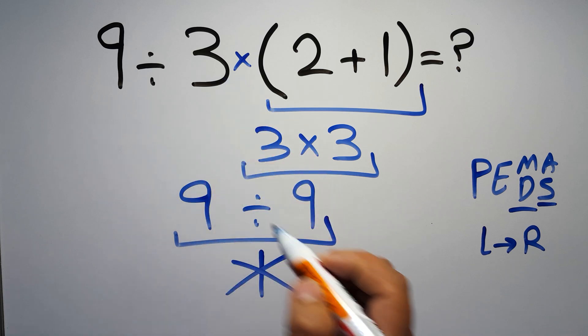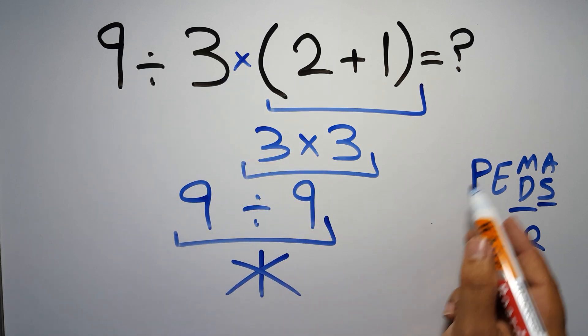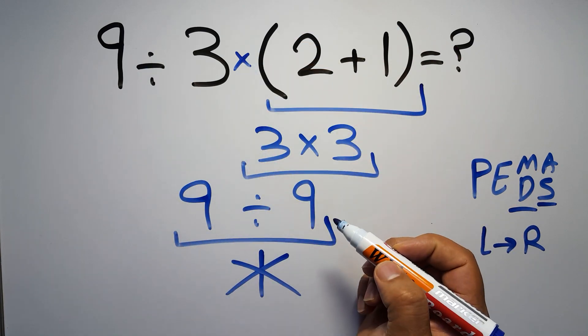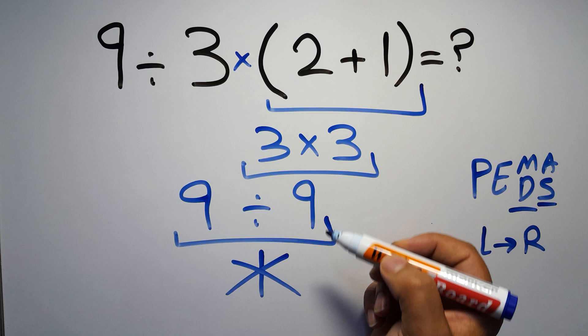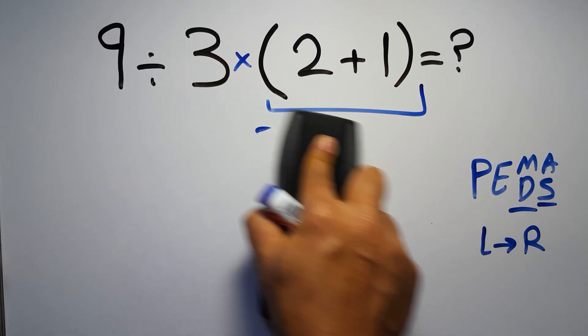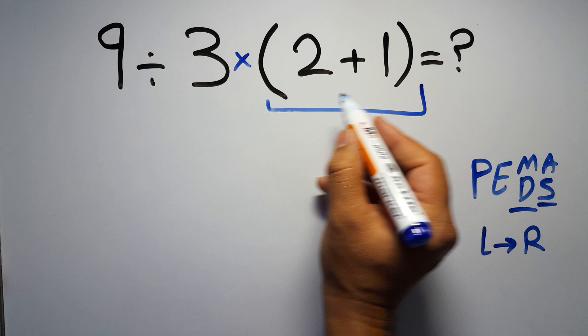multiplication sign for brevity. So according to PEMDAS, first we have to do this parentheses, then this division, and finally this multiplication. If we do this multiplication before this division it is wrong. So first, this parentheses: